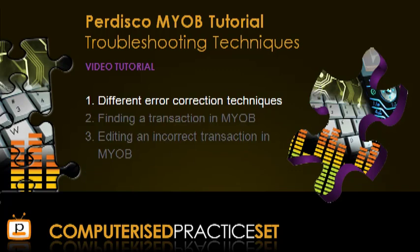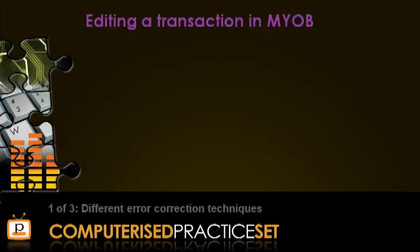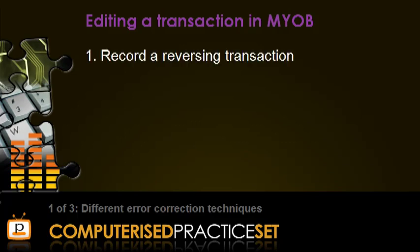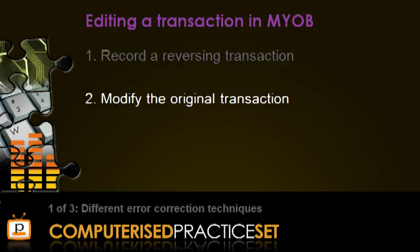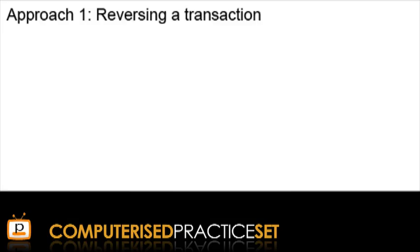Let's begin with the first of these: different error correction techniques. MYOB provides two ways to edit a transaction. The first is to record a reversing transaction, and the second is to modify the original transaction. We'll consider both of these in turn, and start with the first approach: reversing a transaction.